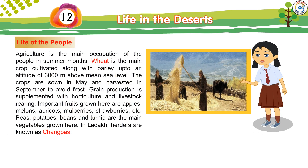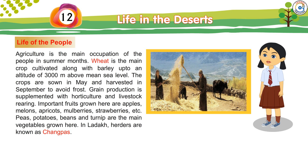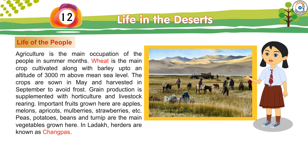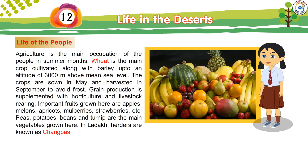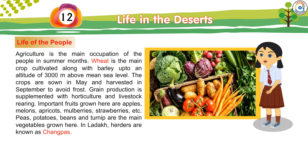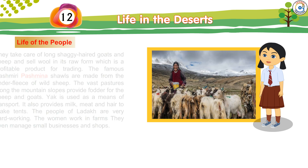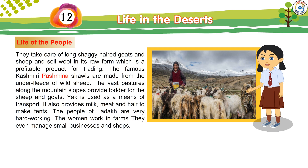Agriculture is the main occupation of people in summer months. Wheat is the main crop cultivated along with barley up to an altitude of 3,000 metres above mean sea level. The crops are sown in May and harvested in September to avoid frost. Grain production is supplemented with horticulture and livestock rearing. Important fruits grown here are apples, melons, apricots, mulberries, and strawberries. Peas, potatoes, beans, and turnip are the main vegetables grown here. In Ladakh, herders are known as changpas. They take care of long shaggy-haired goats and sell wool in its raw form, which is a profitable product for trading.